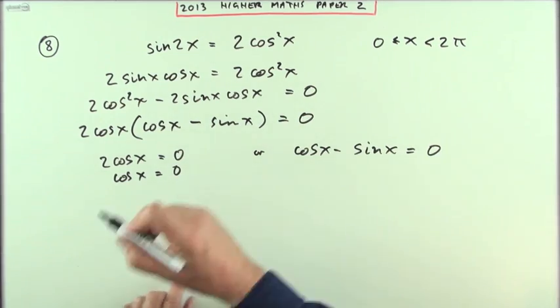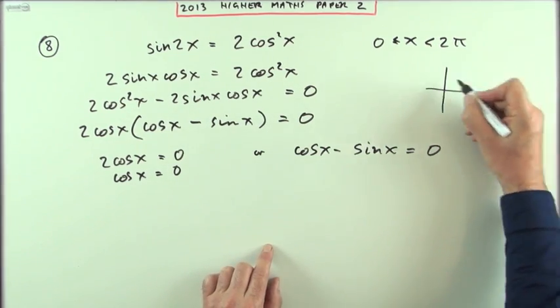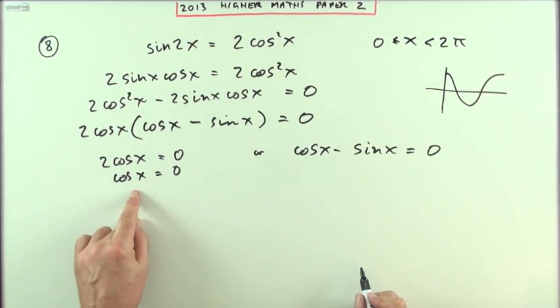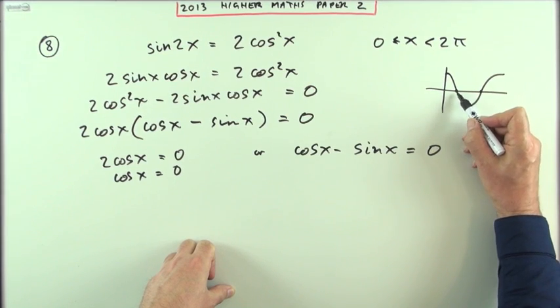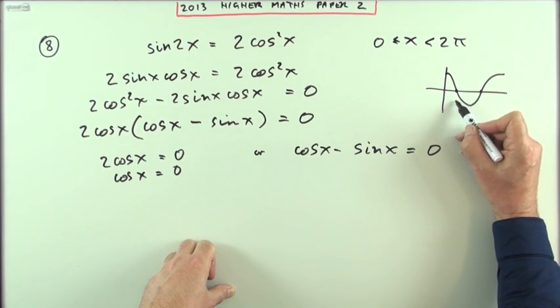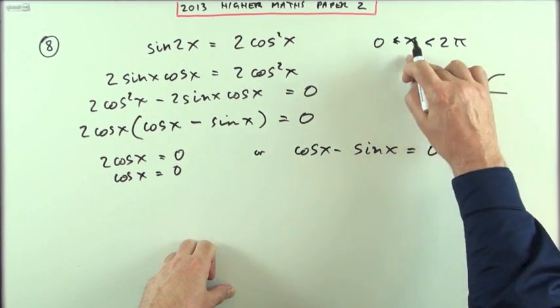You consider the graph of cos x, which looks like this. When is the graph at zero? Here and here: 90 to 270, pi upon 2 and 3 pi upon 2, because it's in radians.